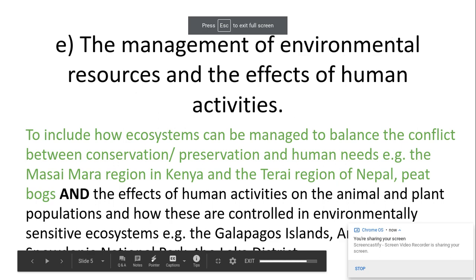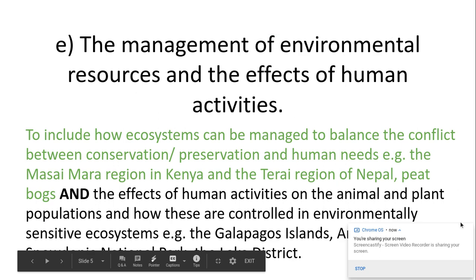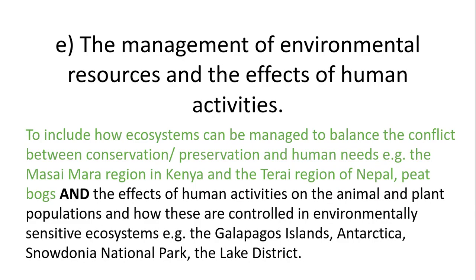Hello biologists, we are looking at 6.3.2, populations and sustainability, which is specification point E. This is part two — we've already looked at part one, which was the bits in green from the specification point. We're now moving on to look at the effects of human activities on animal and plant populations and how they're controlled within the Galapagos, Antarctica, Snowdonia National Park, and the Lake District.